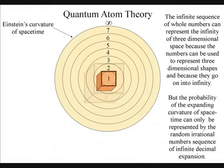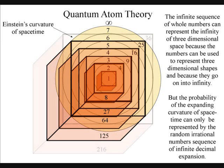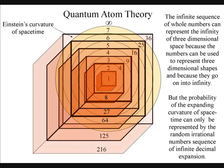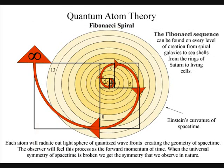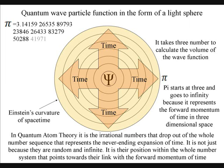It is easy to see how our infinite sequence of whole numbers can represent the infinity of three-dimensional space, because the numbers can be used to represent three-dimensional shapes. But it is the irrational numbers that drop out of the whole number sequence that represent the never-ending expansion of time. In quantum atom theory, the irrational number pi is a physical constant of probability and represents the expanding curvature of space-time. It is not just because they are random and carry on expanding forever. It is their position within the whole number system that points towards their link with the forward momentum of time.